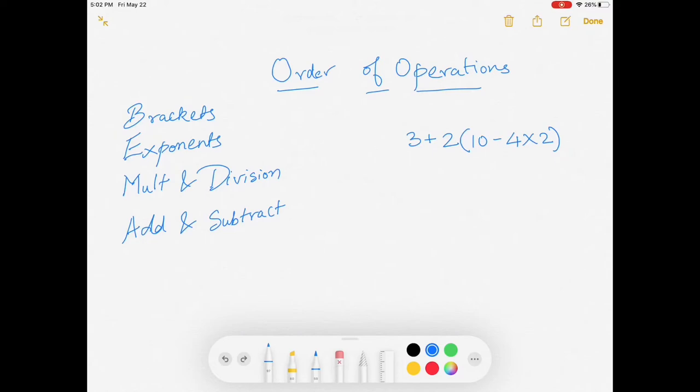Please take a look at these characteristics of order of operations. The first thing you always try to do is brackets, then exponents, then multiplication and division starting from left to right, whichever comes first, and then finally addition and subtraction, again from left to right, whichever comes first.